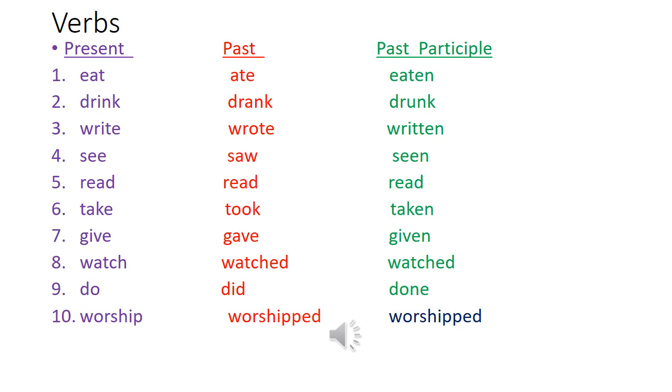Now let's learn some verbs. They are useful to make sentences. Present, present tense, past tense, and then past participle form. Eat. If you do not know the meaning, you can learn the meaning. Eat. Past tense, ate. Past participle, eaten.